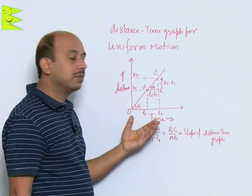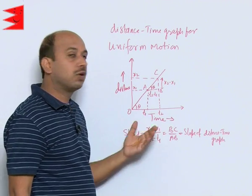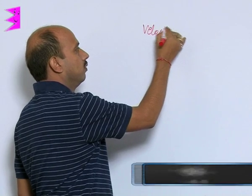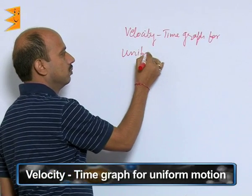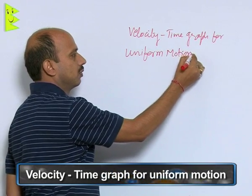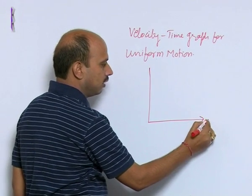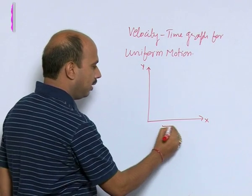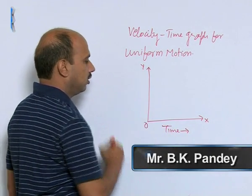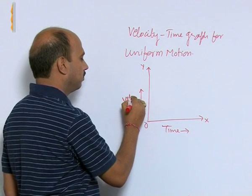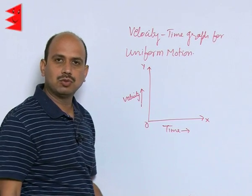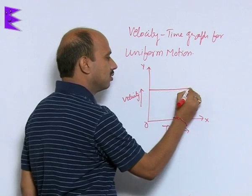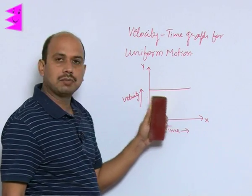Now we will do examples of how to calculate speed and velocity from a given graph. Next, we will do the velocity-time graph for uniform motion. We take X and Y axes — the X axis is the time axis and the Y axis is for velocity, with the origin at zero. In uniform motion, velocity remains constant — both speed and velocity remain constant. So we get a graph like this: a horizontal straight line, which represents the velocity-time graph for uniform motion.